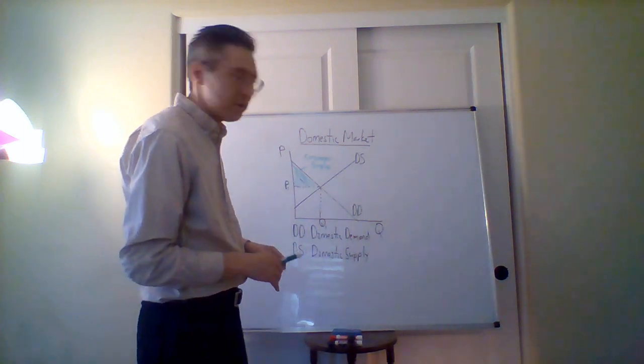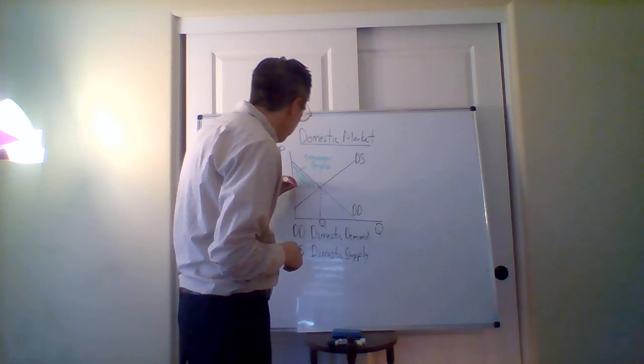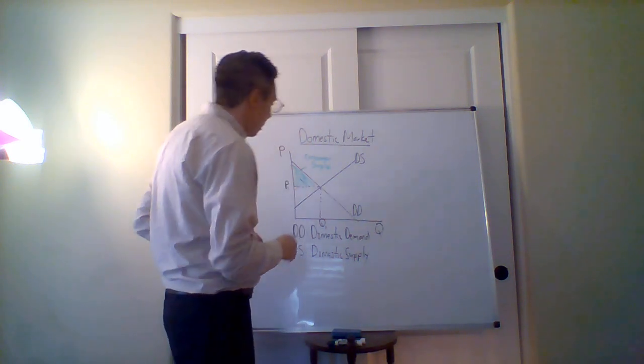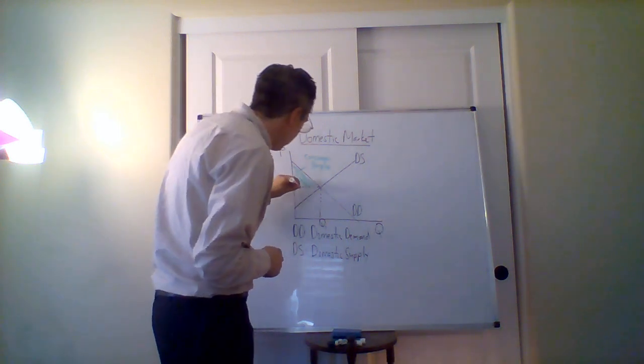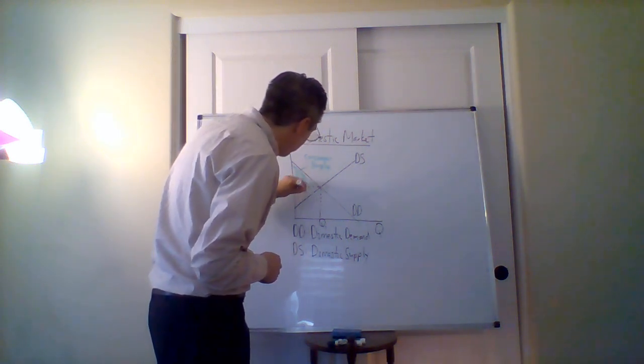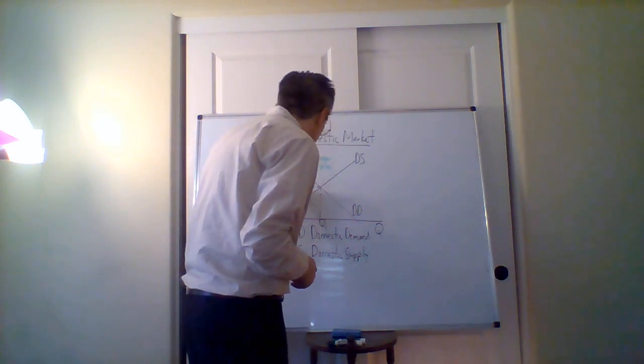Now what about for the sellers? To find the producer surplus, it's basically the area below the price and above the supply curve. It's represented by this red area here - the producer surplus.